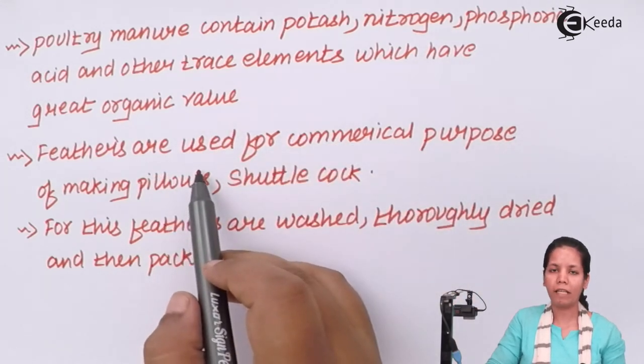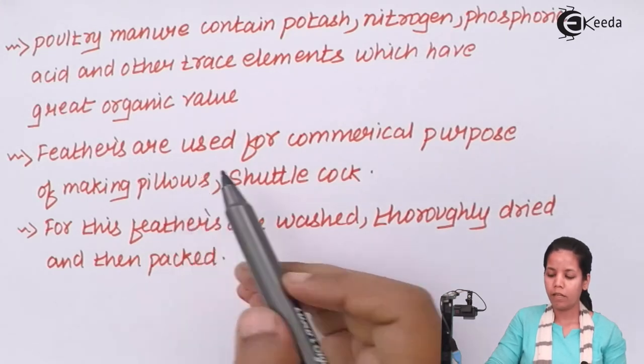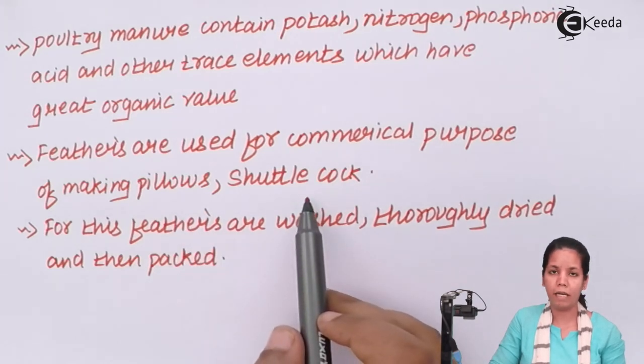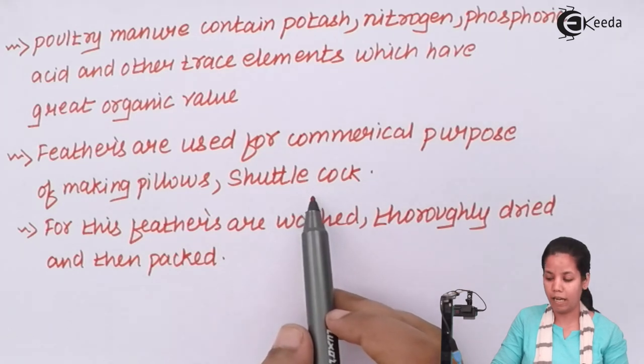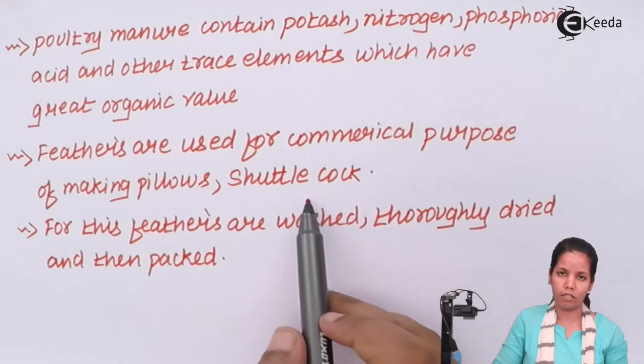Now feathers basically have a lot of application in decoration and for other artifacts. Making pillows, shuttlecock that's used for badminton playing are obtained or made from feathers. For this the feathers are basically removed from the chicken egg or the boiler once they die they are thoroughly cleaned and then they are packed and transported to certain manufacturing units.